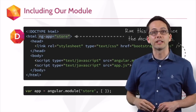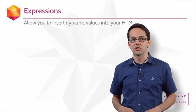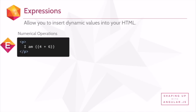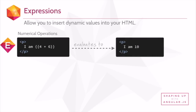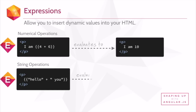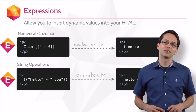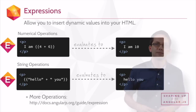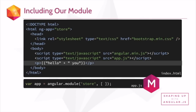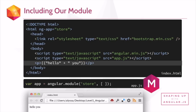And this means we can start writing expressions. Expressions are how we insert dynamic values into our HTML. Here are some basic ones using numerical operations — so if we say 'I am 4 plus 6', that's going to render out on the page as 'I am 10'. We could also do string operations, saying 'hello' plus 'you', and that's going to evaluate to 'hello you', as you might expect. We'll be using lots of expressions inside of our Angular application. If I move 'hello you' into our Angular application and load it up locally in my browser, I'm going to get 'hello you', just as you might expect.